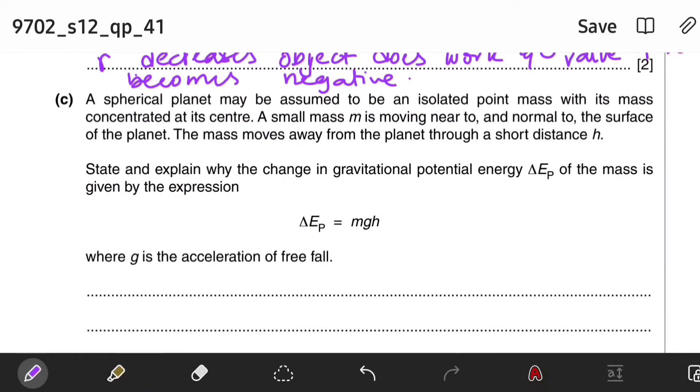Part C: A spherical planet may be assumed to be an isolated point mass with its mass concentrated at its center. A small mass m is moving near to and normal to the surface of the planet. The mass moves away from the planet through a short distance h. State and explain why the change in gravitational potential energy ΔEp of the mass is given by the expression ΔEp = mgh, where g is the acceleration of free fall.